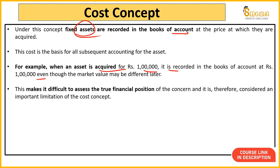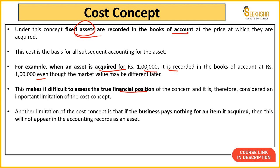Cost Concept ki limitation kya hai? Iska ek critique yeh hai ki isse organization ki true financial position saamne nahi aati. Jo asset aaj ek lakh ka khareeda, kal agar woh ek lakh 20,000 ka ho gaya, lekin financial statement mein toh yeh reflect nahi ho raha. Yeh ek limitation hai is particular concept ki. Doosri limitation yeh hai ki agar ek business ne item acquire ki lekin uske liye kuch bhi paisa nahi diya, toh woh accounting record mein show hi nahi hogi as an asset.